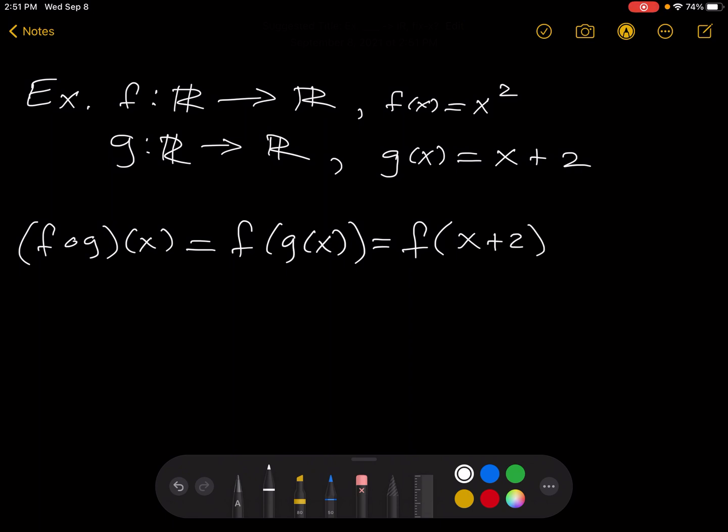All right, so now think about this real fast. The way I like to look at this is you have f of whatever. What does f do to whatever? It squares it. It's whatever squared. So x plus 2 is taking the place of whatever. Okay, so then that's going to be x plus 2 squared.